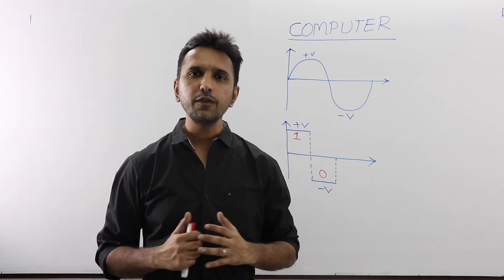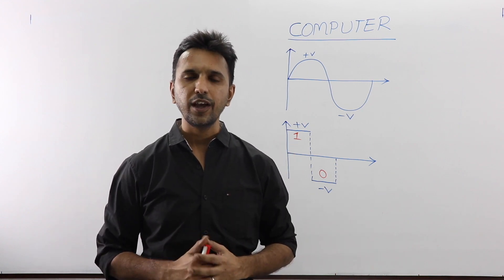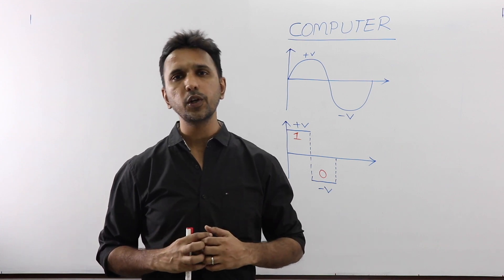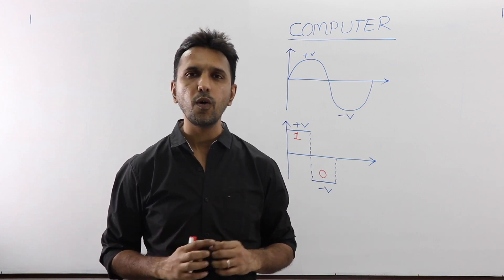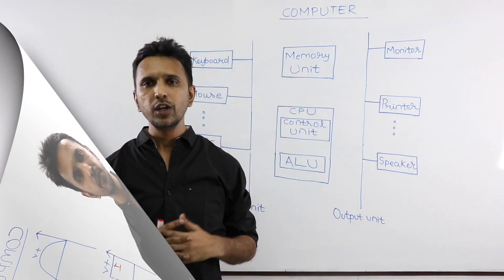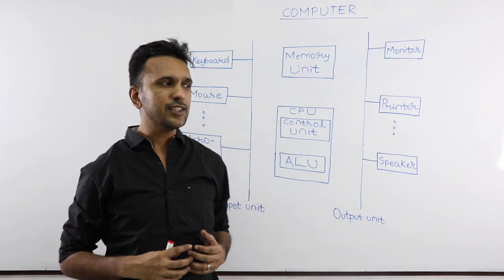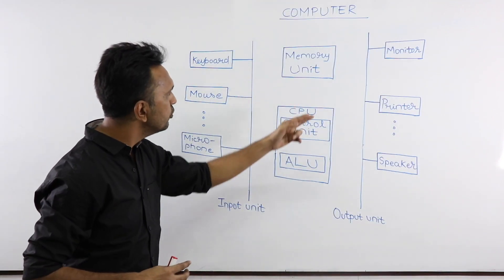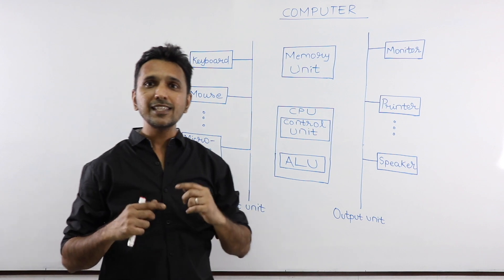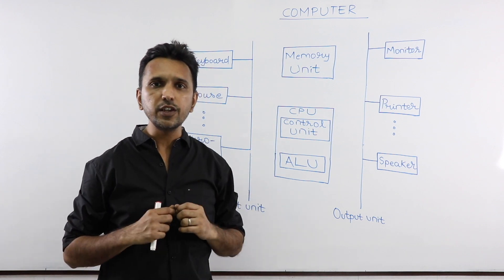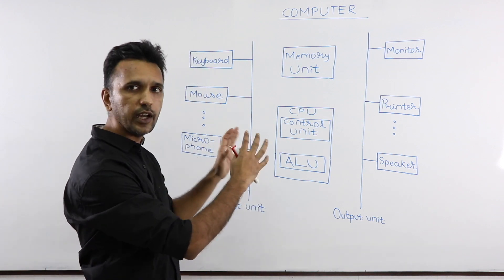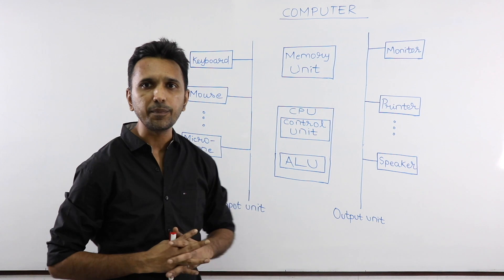Everything which you store in the computer, every information the computer processes, will be in the form of 1s and 0s. Let's now understand the various units of the computer and simultaneously complete this block diagram.